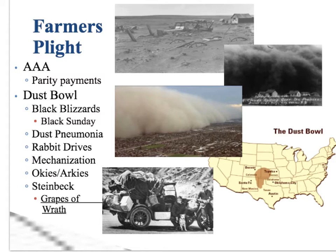This will probably be the longest slide of this unit — a lot to talk about, because this is a huge topic. Farmers throughout the 20s were already having problems because they were growing too much food — overproduction. Nobody was buying it; Europe stopped buying after World War I. So even in the 20s, when everybody else was doing incredibly well, farmers were struggling, and things just get worse for them as we go through the 1930s.